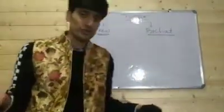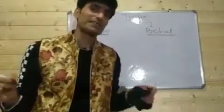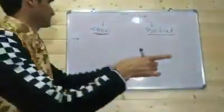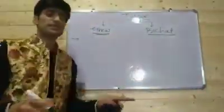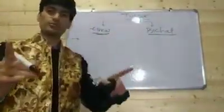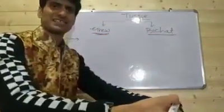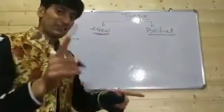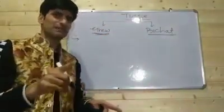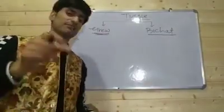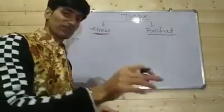What do you mean by tissue? Tissue means a group of similar or dissimilar cells, if they have the same origin and they are performing similar functions.